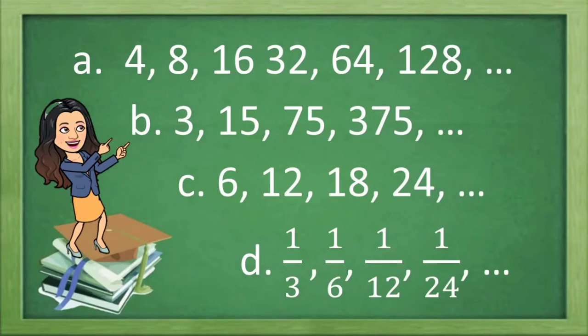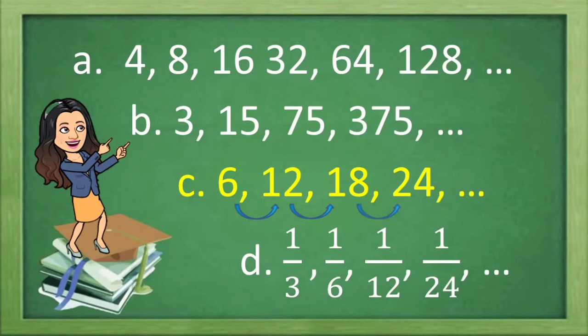Here are a set of numbers written in specific order. Now which of the following is an arithmetic sequence — is it A, B, C, or D? That is letter C. Because they have a common difference of 6. If you add 6 to the first term, you will obtain the second term. If you add 6 to the second term, you will obtain the third term. If you add 6 to the third term, you will get the fourth term, and so on.